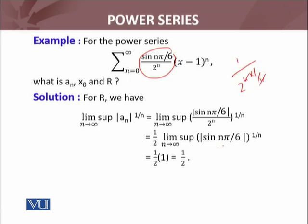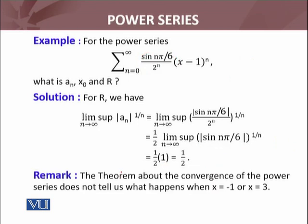Because 2^n times 1/n gives 1/2. And in the numerator we have |sin(nπ/6)|^(1/n). Now, the supremum of the sin value lies between plus or minus 1, so the limit superior will be 1. Therefore, 1/2 times the limit is 1/2. R equals 1 over lim sup |a_n|^(1/n), so R will be 2.